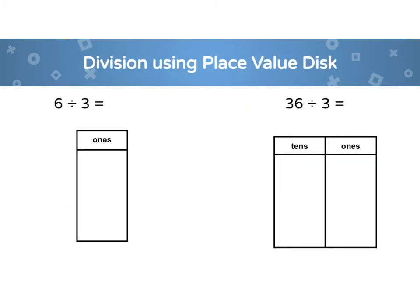Division using place value disks. In my first problem, I have six ones and I want to divide into three groups. Let me show you how we're going to do that on our place value chart. My total is six disks — one, two, three, four, five, six. Now I want to divide them into three equal groups, and my quotient is going to be how many are in each group.